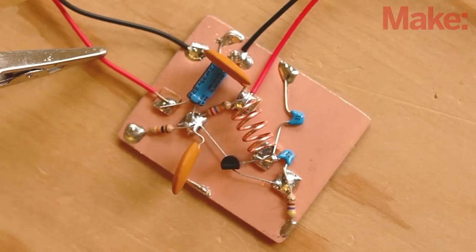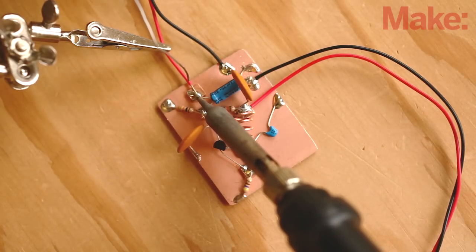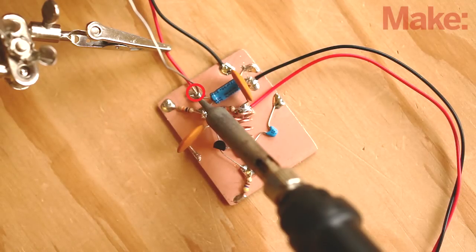Now we just have to add the battery clip and the phone plug. Solder both black wires to the ground plane, the red battery clip lead to the end of the coil with the resistor, and the red phone plug lead to the negative side of the electrolytic capacitor.